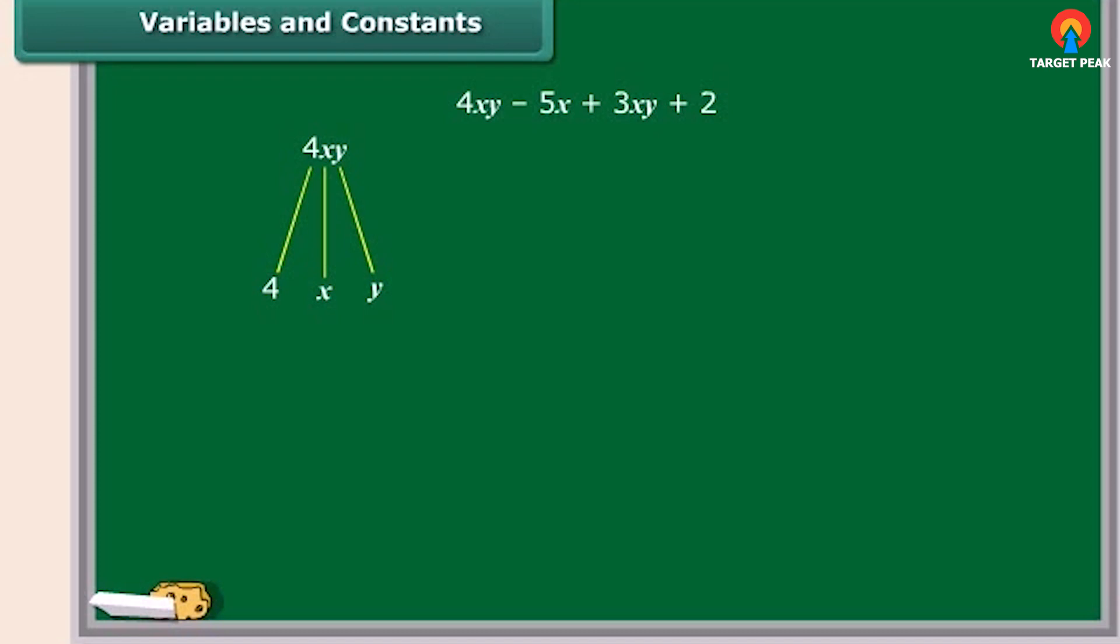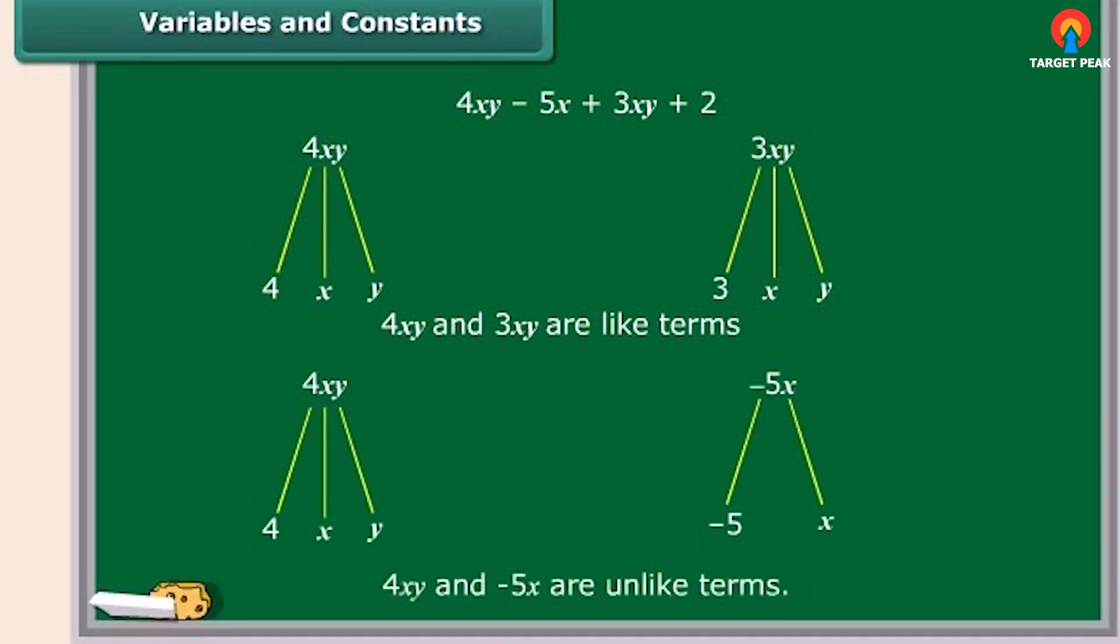Likewise, the factors of 3XY are 3, X and Y. So, both the terms have same algebraic factors, which means 4XY and 3XY are like terms. On the other hand, the terms 4XY and minus 5X have different algebraic factors. So, they are unlike terms.